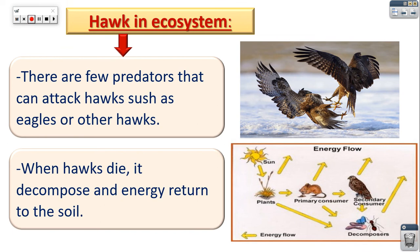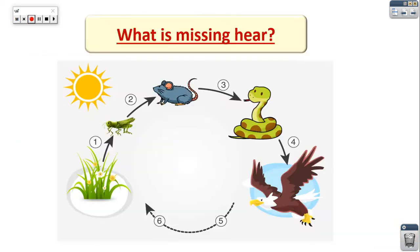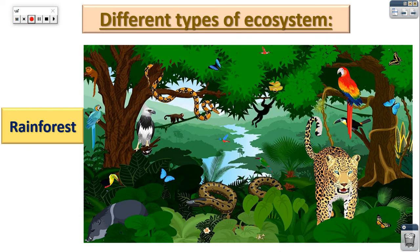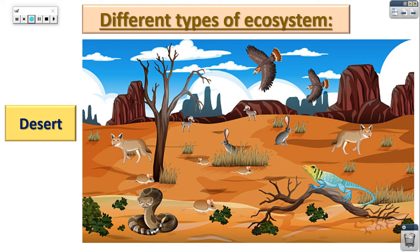There are a few predators that can attack the hawk, such as eagles or other hawks. When the hawk fights with eagles and other hawks, it can die. Then decomposers eat or decompose its body and change the chemical energy inside into nutrients. Different types of ecosystems include ocean, rainforest, desert, and tundra.